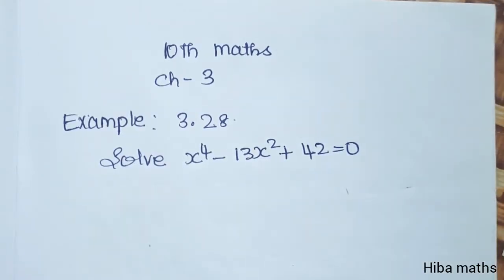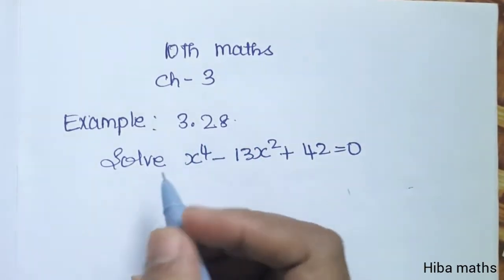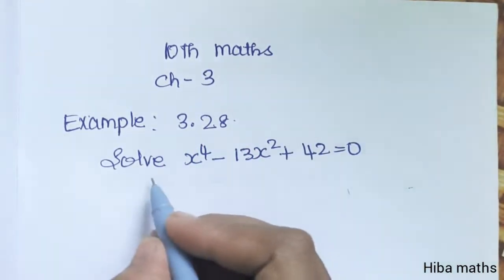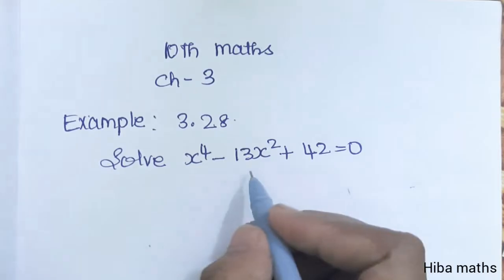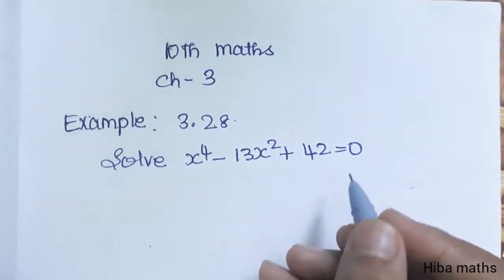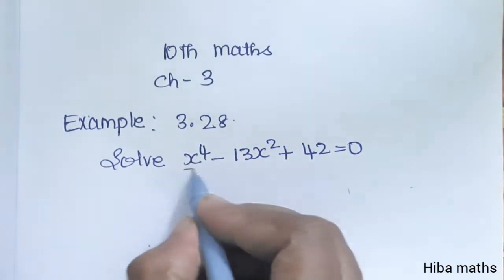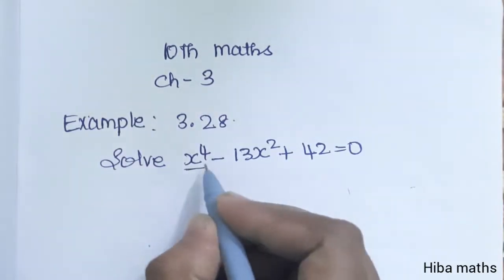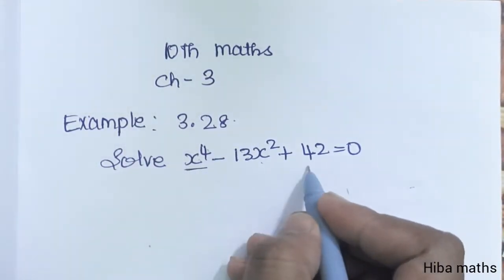Hello students, welcome to Hima Max 10th standard. Chapter 3, Example 3.28: Solve x power 4 minus 13 x square plus 42 equal to 0. This is a quadratic equation where x square is the variable and x is constant.